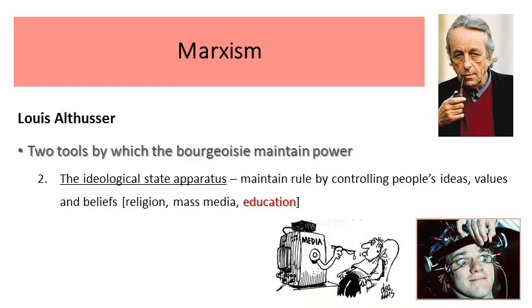The second tool is the ideological state apparatus, and we're more interested in this with regards to education. Ideological state apparatuses or ISAs include religion, the mass media and education. This is the way in which the bourgeoisie maintain their rule by controlling people's ideas, values and beliefs. If you think about how education works, ultimately it is members of the middle classes — teachers — telling young people what to believe, how to understand the world around them, and what is true. By deciding which information to include and which to exclude, it is a very powerful tool by which the bourgeoisie can maintain control.